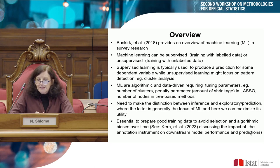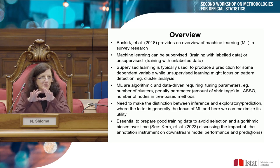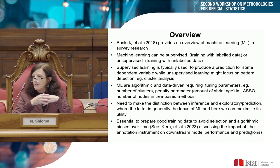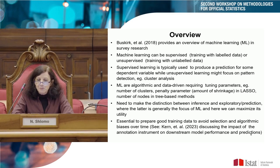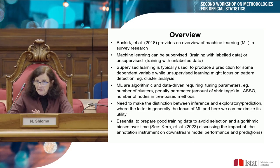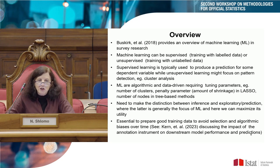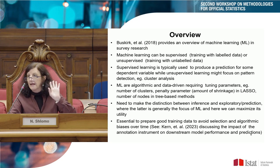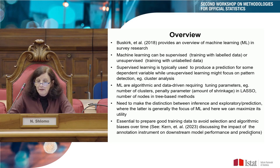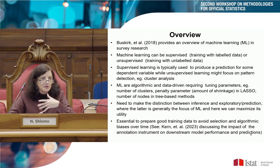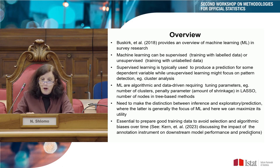We need to distinguish between inference and prediction. I don't think machine learning as yet is in the space where we can use it for inference, but certainly for prediction. A recently published paper by the group in Mannheim — Kern 2023 — has a great paper about training data and how to avoid selection algorithmic biases over time, discussing the impact of the annotation instrument to produce training data.